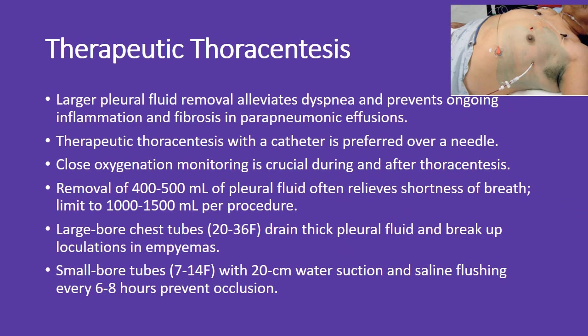Therapeutic thoracentesis: larger pleural fluid removal alleviates dyspnea and prevents ongoing inflammation and fibrosis in parapneumonic effusions. Thoracentesis with a catheter is preferred over a needle. Close oxygenation monitoring is crucial during and after the procedure. Removal of 400–500 mL of pleural fluid often relieves shortness of breath. Limit removal to 1,000–1,500 mL per procedure. Large-bore chest tubes (20–36F) drain thick pleural fluid and break up loculations in empyemas. Small-bore tubes (14 or 17F) with 20 cm water suction and saline flushing every 6–8 hours prevent occlusion.